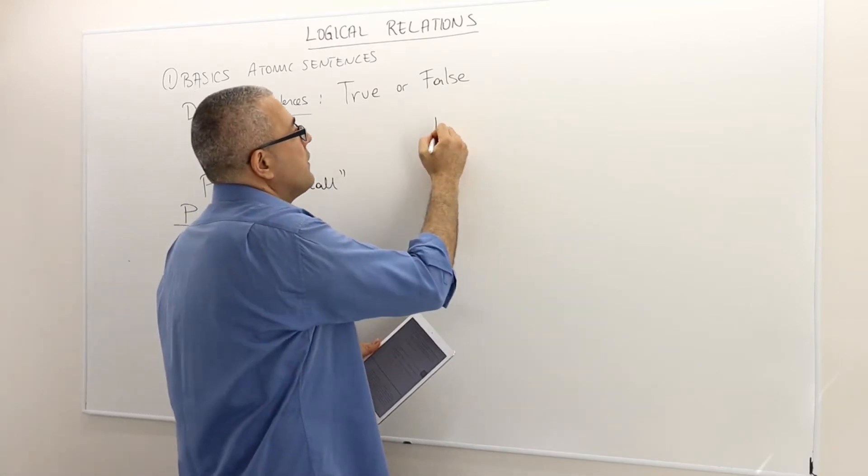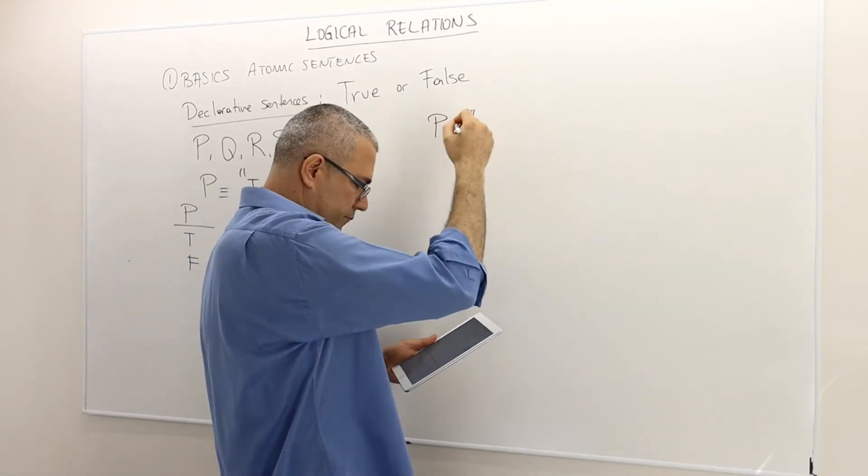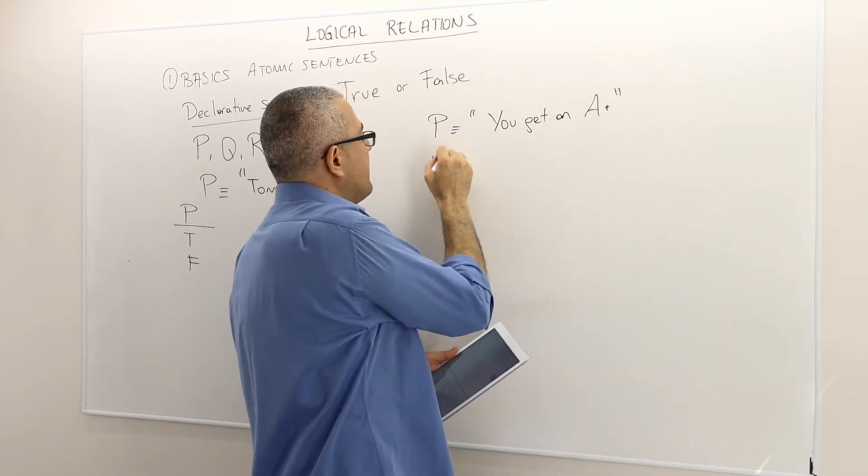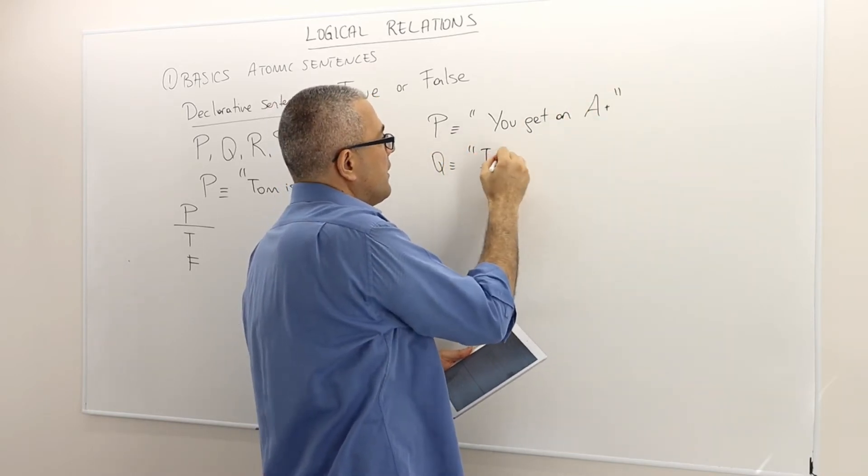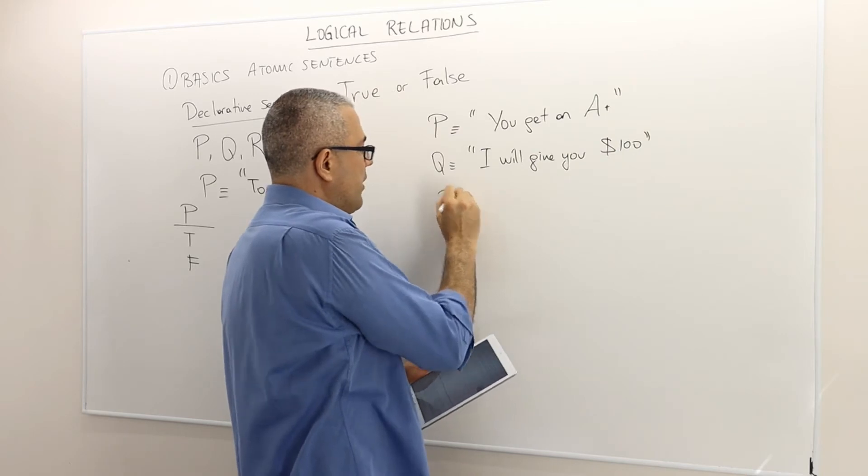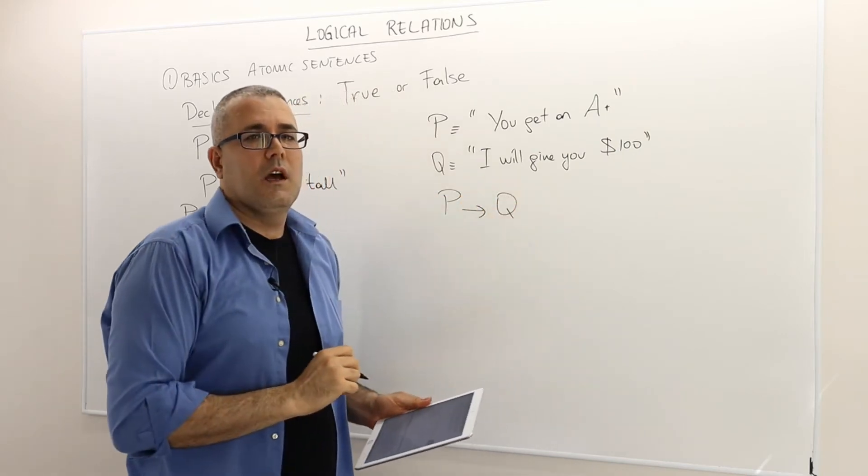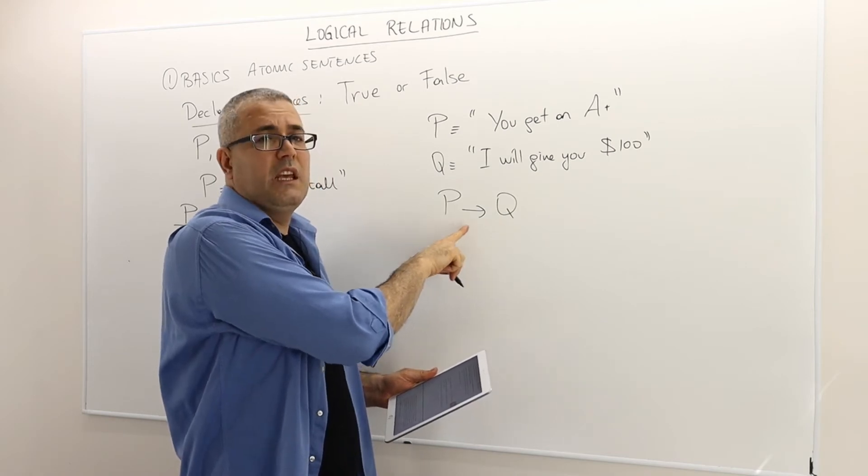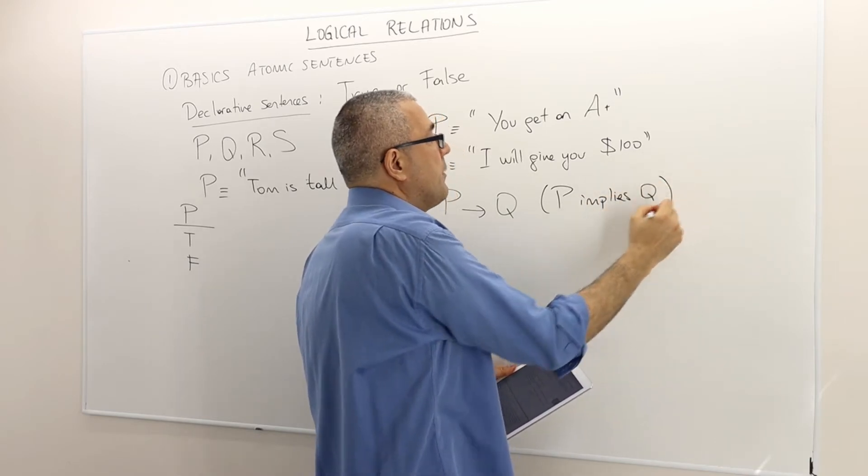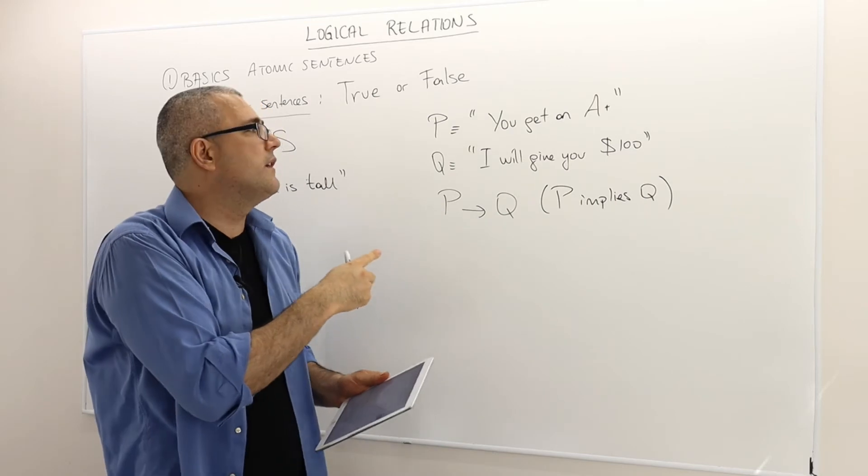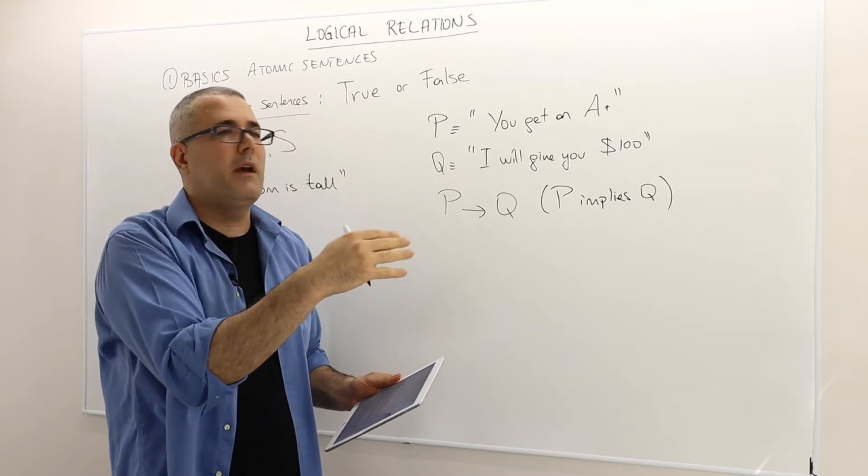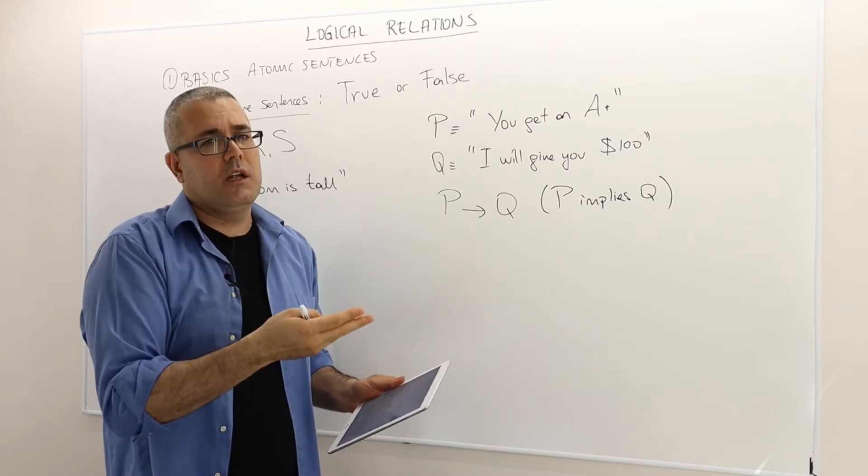Alright, so I'm going to give you an example. Let's say P is the following sentence: You get an A plus. And then Q is the following sentence: I will give you $100. So when I say something like this, it says P implies Q. For the example that we have, it reads basically as follows: If you get an A plus from some course that we're talking about, then I will give you $100.